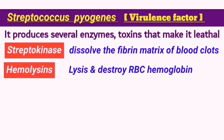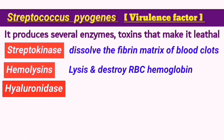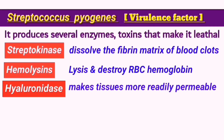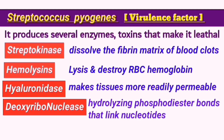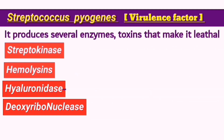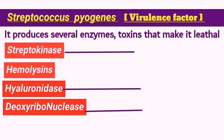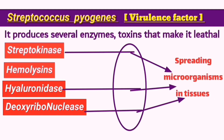S. pyogenes also produces hyaluronidase which decomposes the connective tissues in skin, and can produce deoxyribonuclease which breaks down the DNA which controls the cells. By connecting these events together, you can see that the hyaluronidase, deoxyribonuclease and the streptokinase contribute to the wide spreading of streptococcus infections through the cells.